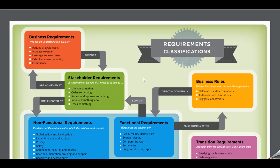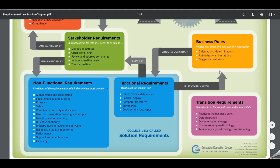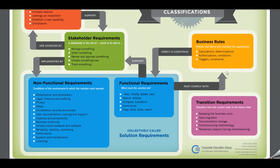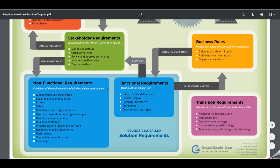Next we move on to business rules, which are policies that direct and constrain the organization. They can include different types of policies, calculations, authorizations, limitations, triggers, or constraints. Business rules directly influence solution requirements, so when brainstorming solution requirements, you have to take business rules into account, as some functional or non-functional requirements may need to be adjusted to accommodate them.